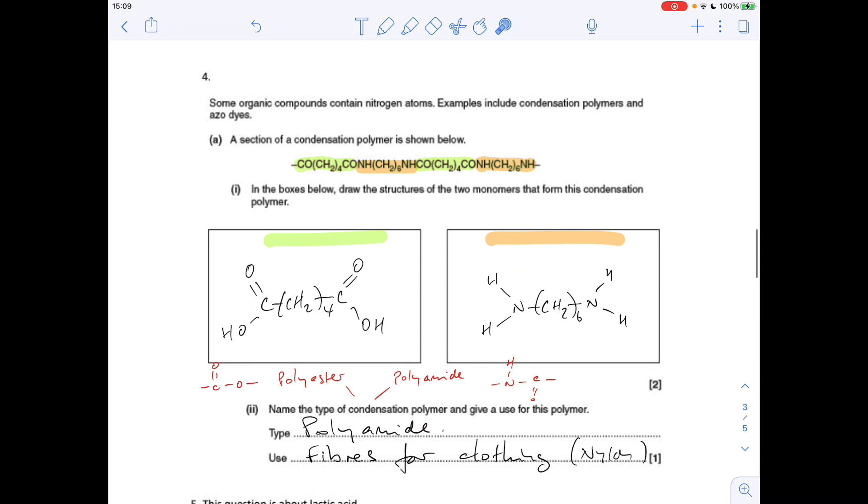Question four, a section of a condensation polymer is shown below. In the box, draw the structures of the two monomers that could form this polymer. So you can see I've used colour again. So these green bits here, you can see they're the same. That would have been, in the monomer form, it would have been a dicarboxylic acid. So we just turn these CO groups into carboxylic acids. And they're the same as well. So that's going to be a diamine. And so we've got NH2 groups at the ends.